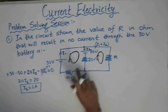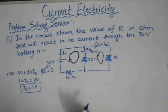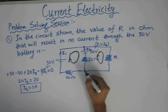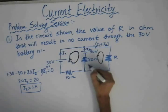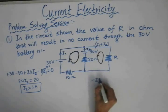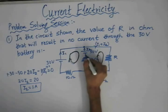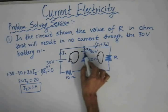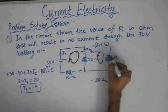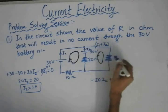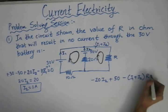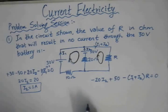Now we require the value of R. To find it, we apply KVL to the second loop. Starting from this end, the current I2 and the clockwise loop direction coincide, giving a negative potential drop of minus 20·I2. Then for the battery, we move from the negative terminal to the positive terminal, giving a positive EMF of plus 50. The current direction and loop direction coincide again, so we get a negative drop of I1 plus I2 times R, equals zero.